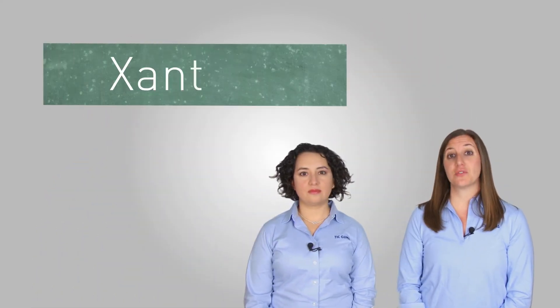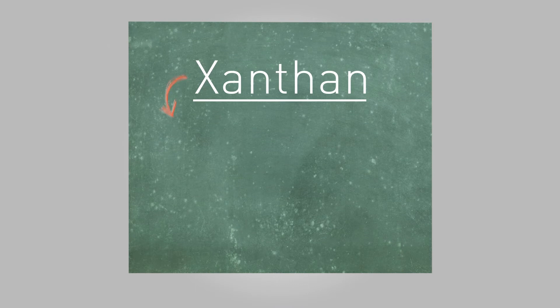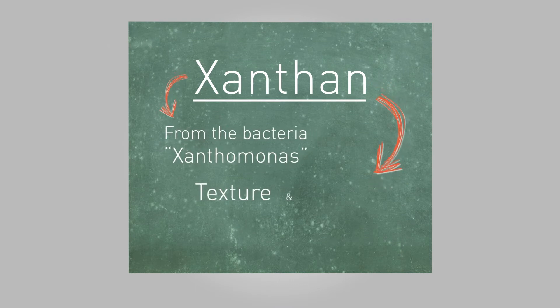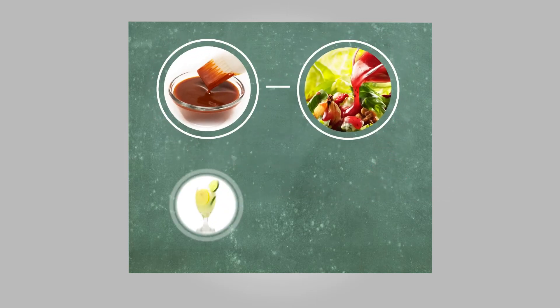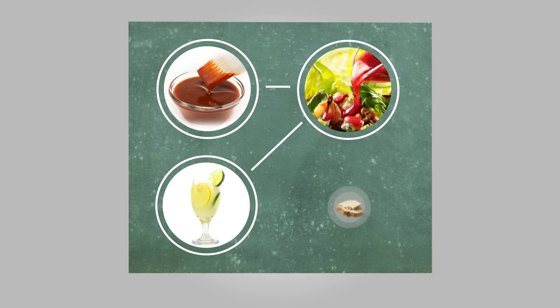Out of these different fermentation gums, there's one that you're more likely to hear about, and that's xanthan. Xanthan is derived from the naturally occurring bacteria Xanthomonas and is widely used in the food industry for its incredible ability to provide both texture and stabilization. You're likely to find it on labels for products like sauces, dressings, beverages, and even gluten-free bread.